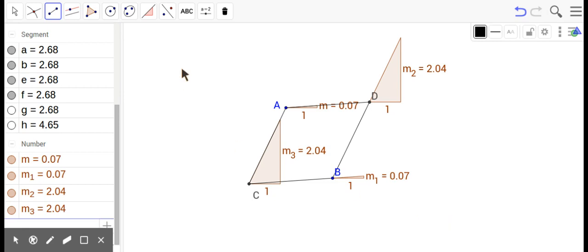All right, let's play with another quadrilateral. Let's look at the slopes. We have 0.07, 0.07, 2.04, 2.04. So it's just a parallelogram, right?